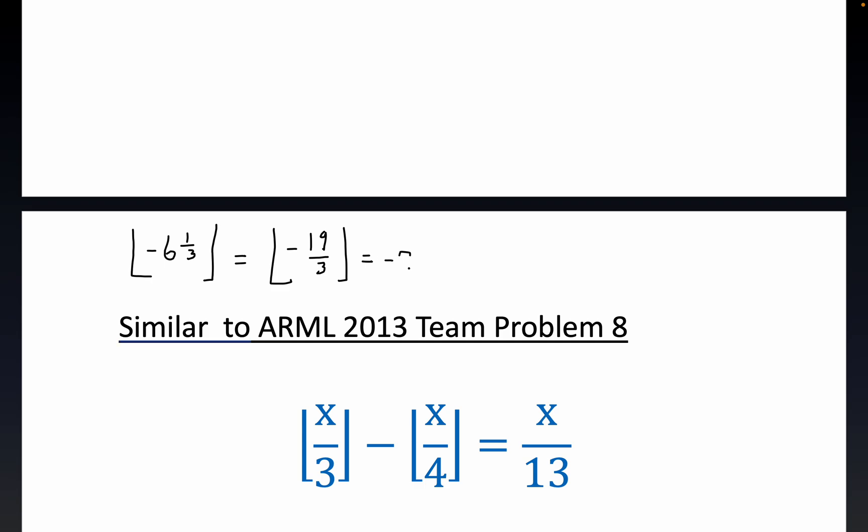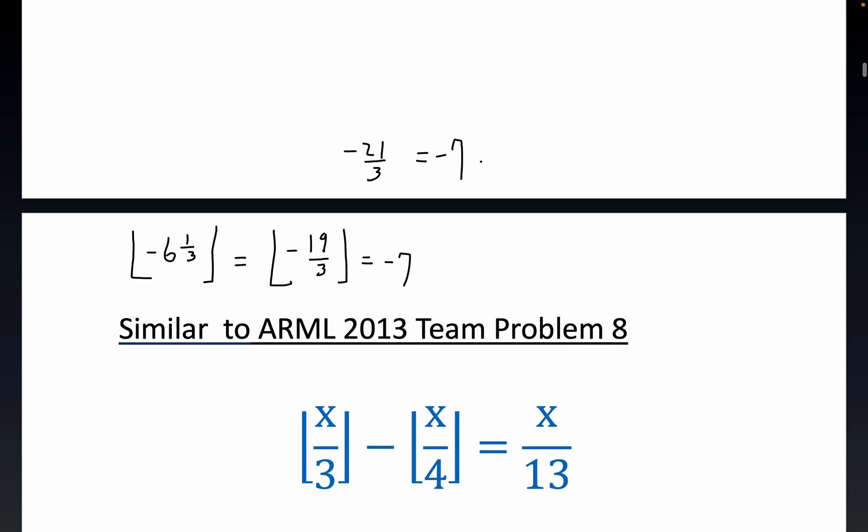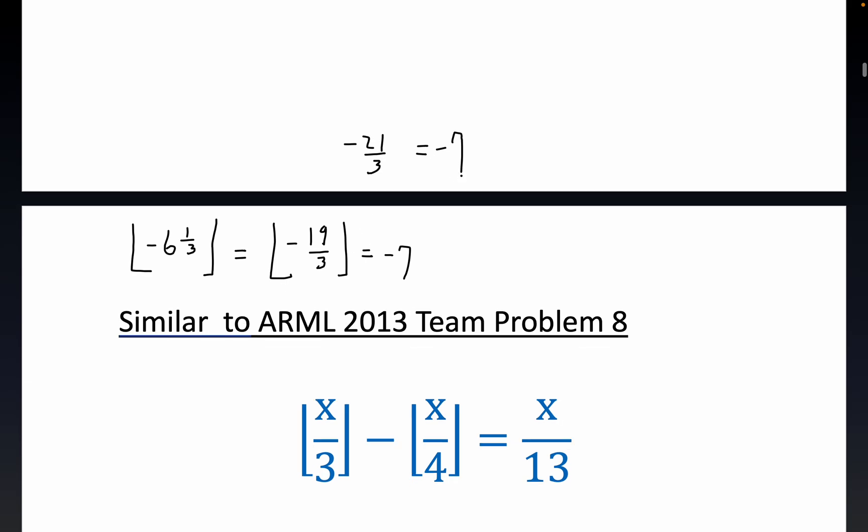Now this is equal to negative seven. And to see that, just remember, minus 21 over three is another name for negative seven. So this is what they call the greatest integer function, and negative seven is actually the greatest integer that is greater than minus nineteen over three.